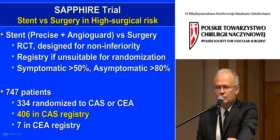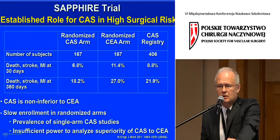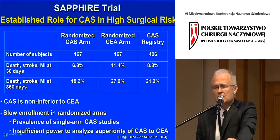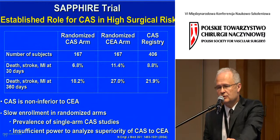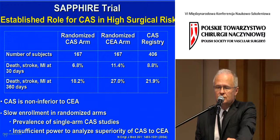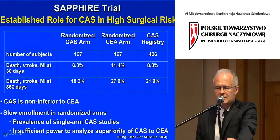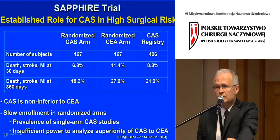The SAPPHIRE trial was designed for non-inferiority. Results showed no statistically significant difference, though numbers were relatively low compared to subsequent studies. Although there was a numerical difference, it did not reach statistical significance for superiority. It confirmed non-inferiority of endovascular treatment for the composite of death, stroke, and MI at 30 days and at one year. Criticisms included slow enrollment, more patients in the registry than in randomization, and insufficient statistical power to analyze superiority.